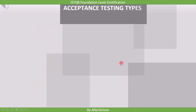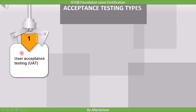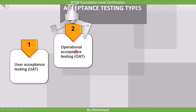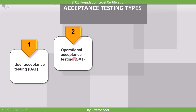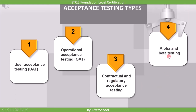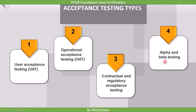There are different types of acceptance testing. In this course, we will learn about four types: the first is user acceptance testing (UAT), the second is operational acceptance testing (OAT), the third is contractual or regulatory acceptance testing, and the fourth is alpha and beta testing.